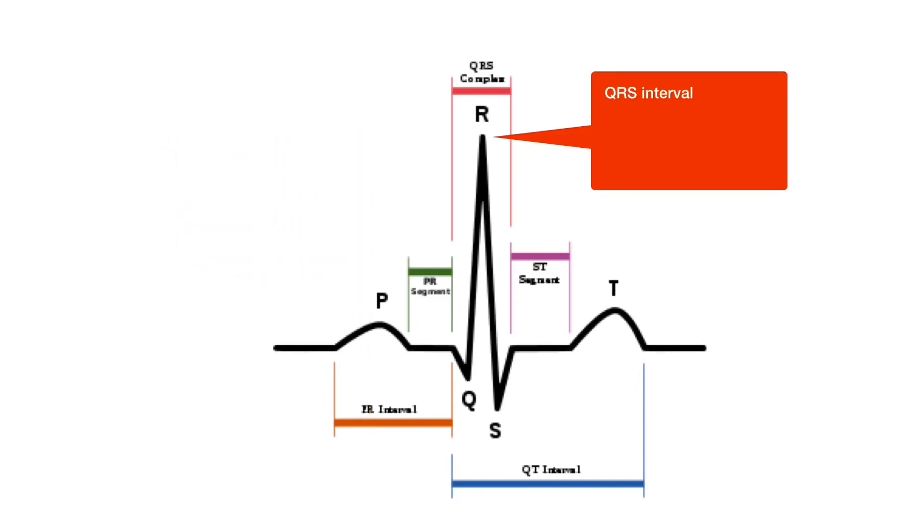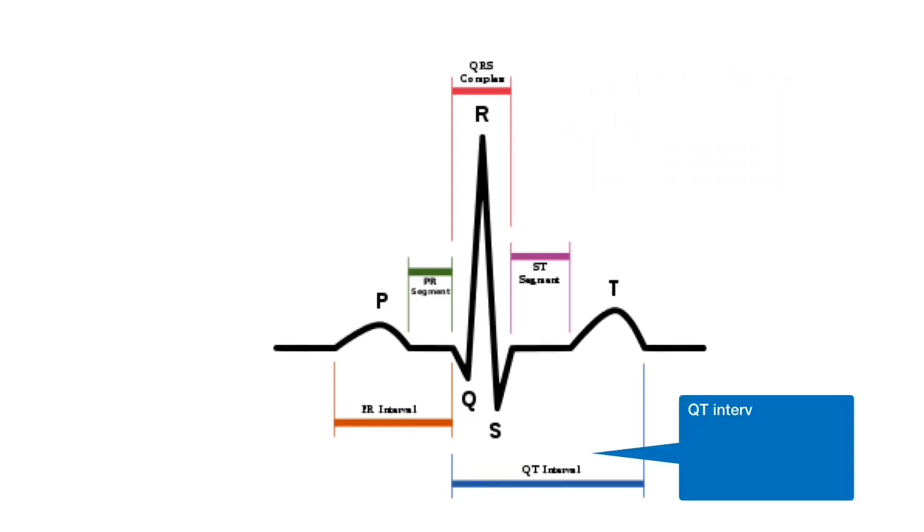The time from beginning of Q-wave to the end of S-wave is called QRS interval which represents time taken by impulse to spread through two ventricles. Time from onset of Q-wave to the end of T-wave is called QT interval which represents total electrical activity of ventricles.